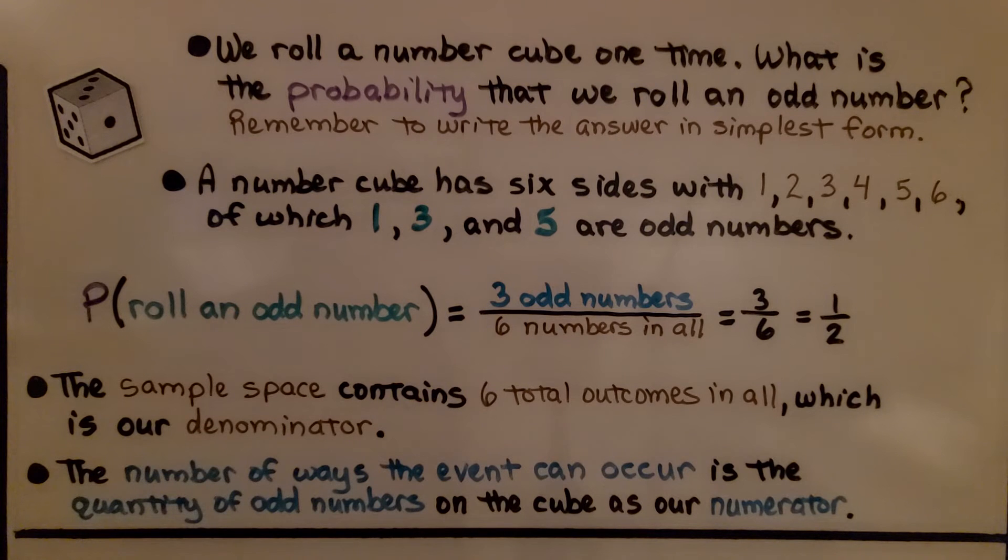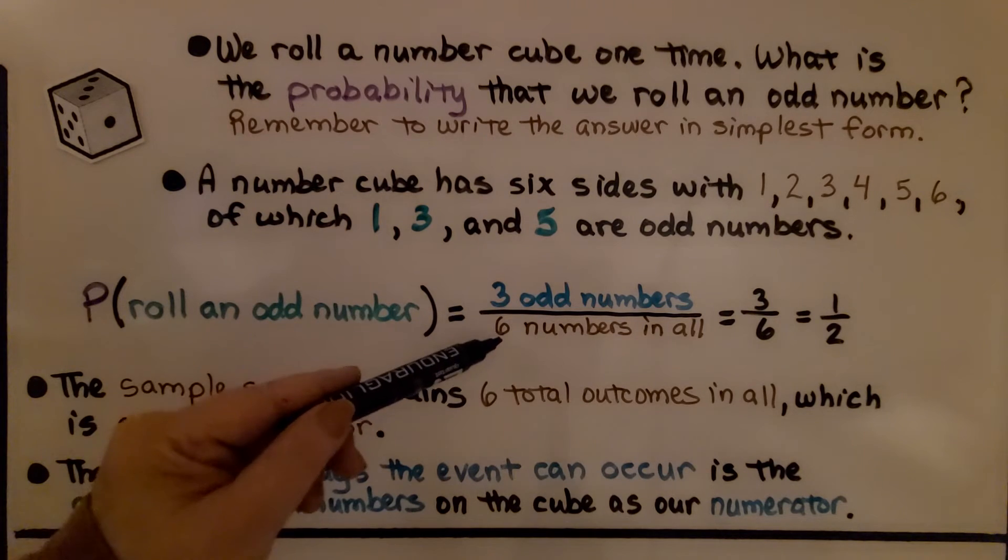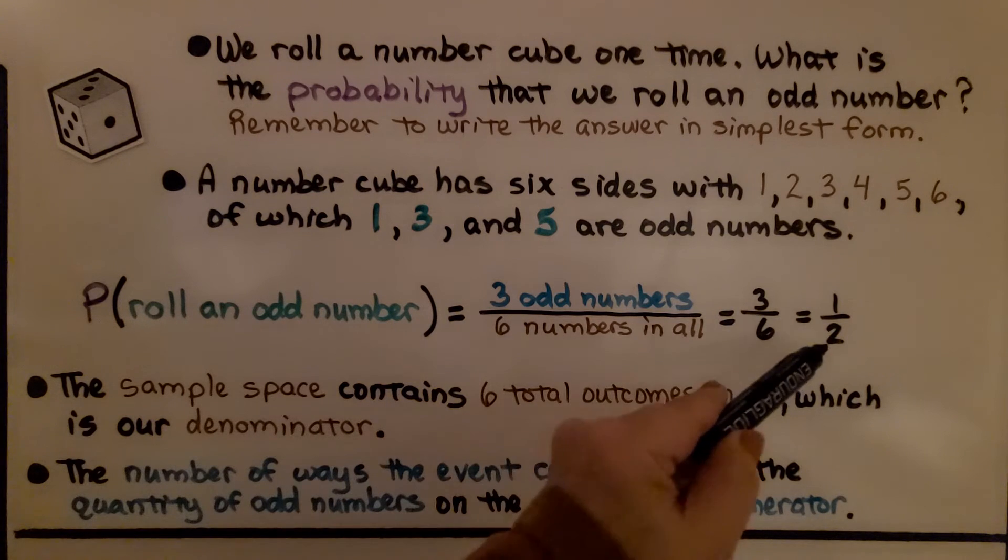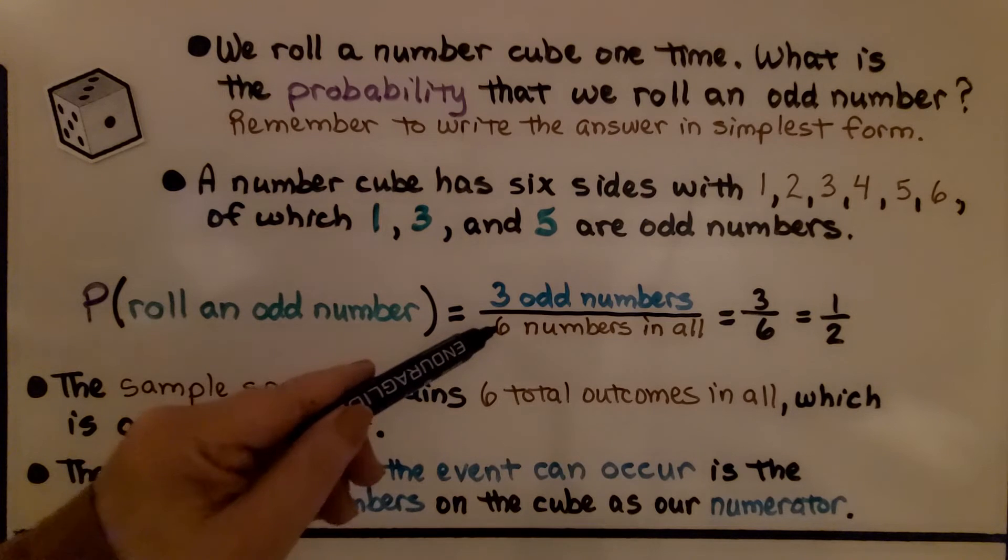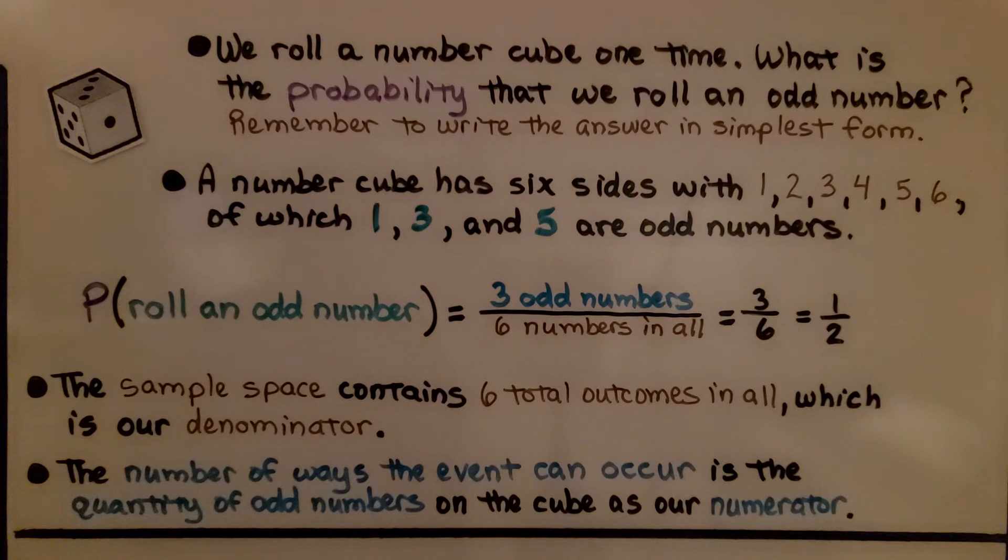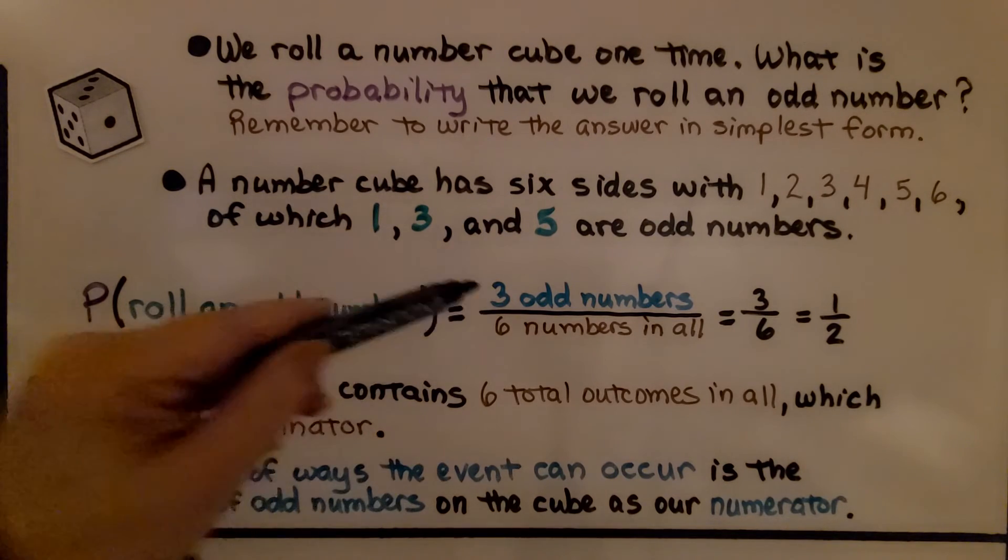The probability that we roll an odd number would be three odd numbers out of six numbers in all. That would be three-sixths, which simplifies to one-half. The sample space contains six total outcomes in all, these six different numbers, which is our denominator. The number of ways the event can occur is the quantity of odd numbers, there's three of them, on the cube as our numerator.